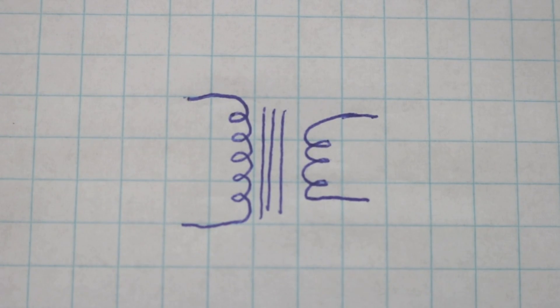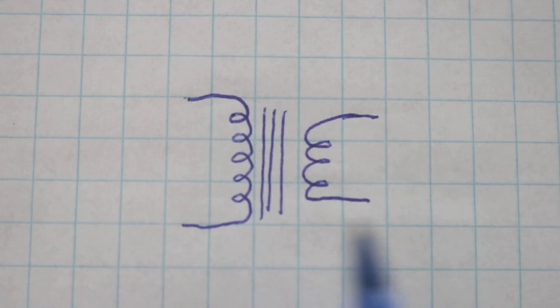For example, if you have 100 windings here and 10 here, there will be a tenfold relationship of voltages. You apply 120 volts to the primary and you obtain 12 volts in the secondary.